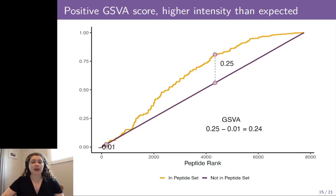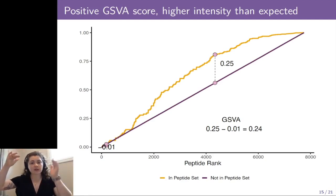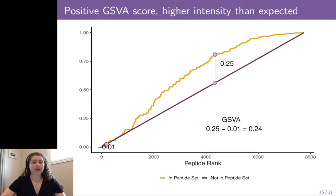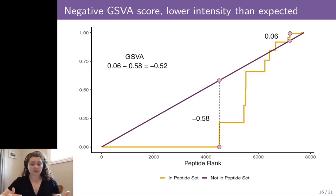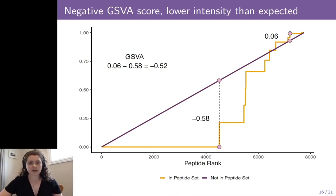This slide shows what a positive GSVA score would look like, where we have a peptide set that is ranked more highly than we would expect. We compare the random walk of a peptide set — the orange line — to all of the peptides not in the set, which is the purple line. We add the most positive deviation to the most negative deviation. In this case, we add 0.25 to negative 0.01 for a final GSVA score of 0.24. An example of a negative GSVA score looks like this: the orange line doesn't rise until much later in the peptide rankings. We add 0.06 to negative 0.58 for a final GSVA score of negative 0.52.